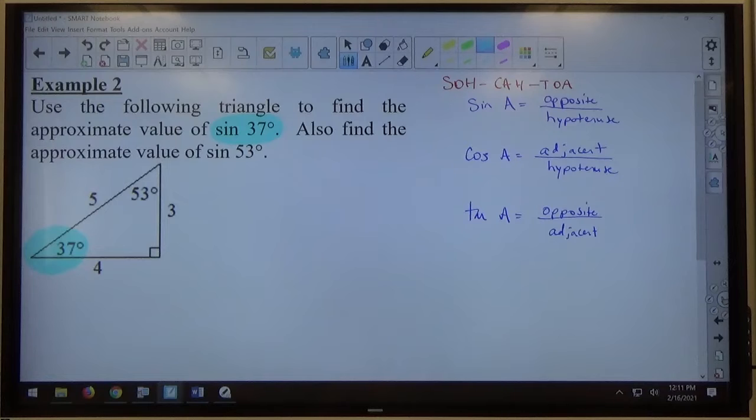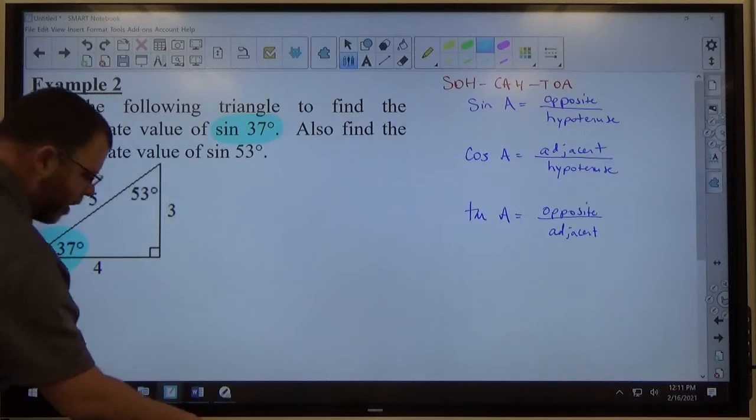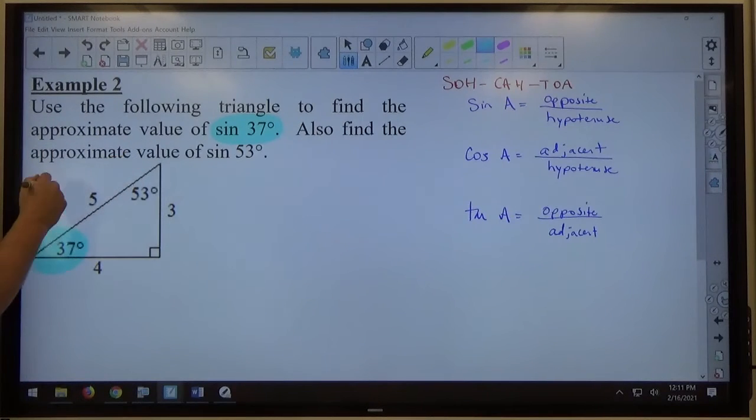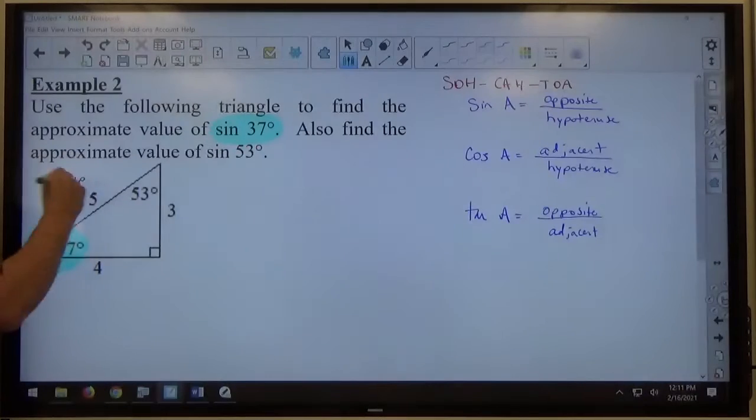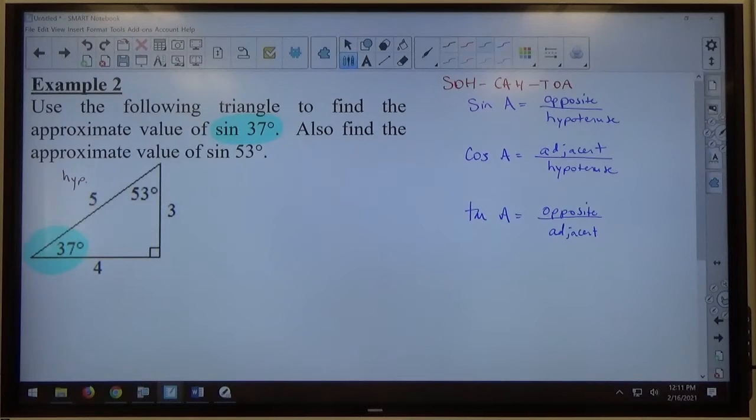You can see the triangle here is drawn in standard position. My right angle is in the bottom right-hand corner here. That means the slanted side is the hypotenuse. I usually abbreviate with three letters.